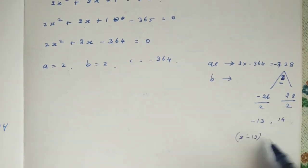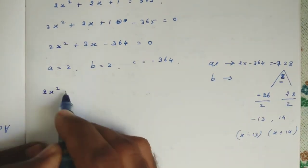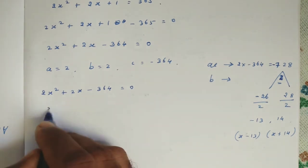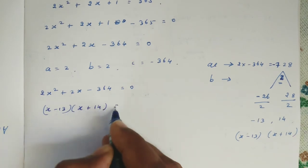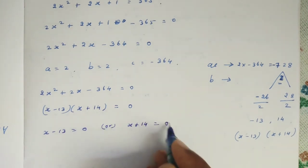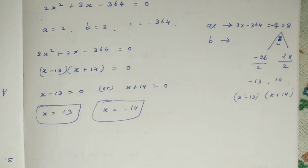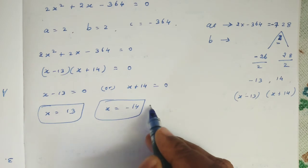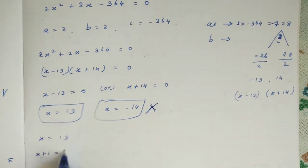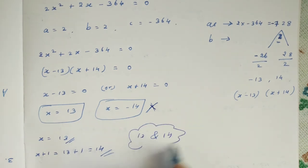So we can write: 2X squared plus 2X minus 364 equals 0, and the factors are (X minus 13)(X plus 14) equals 0. Then X minus 13 equals 0 or X plus 14 equals 0, giving X equals 13 or X equals minus 14. Since the problem asks for positive integers, X cannot be negative, so X equals 13. The first number is 13 and the second number is X plus 1, which is 13 plus 1, equals 14. The two numbers are 13 and 14.